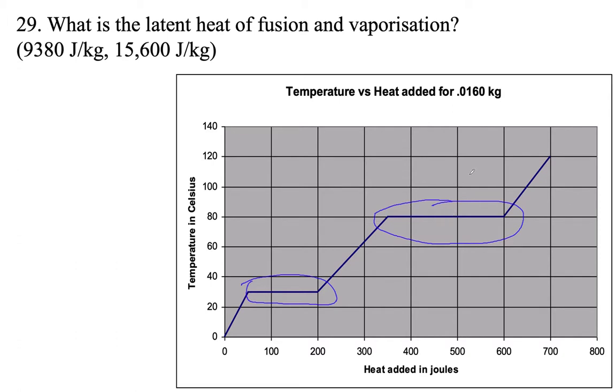And then we notice that we've got 0.016. That's our mass. So mass is 0.016 kg. And then we're going to use Q equals ML. So L is just Q divided by M. So all we need is the heat that flows in.